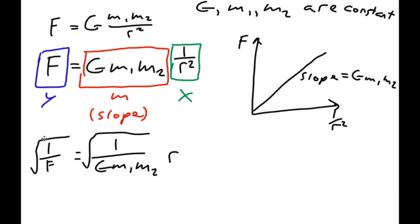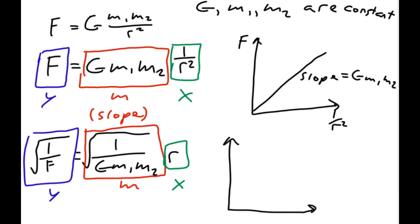So now, again, in this case, this is going to be my Y value. This is my M value, and this is my X value. So I could graph instead, root of 1 over F versus R. And I'll change my Y value. And this will be my X value again, which will also give me, which will also give me this straight point. The slope will equal root 1 over G, M1, M2. And that is how we can linearize with a known formula, a known equation.